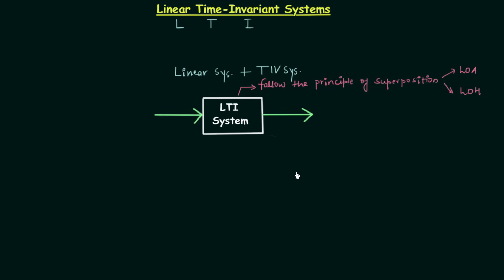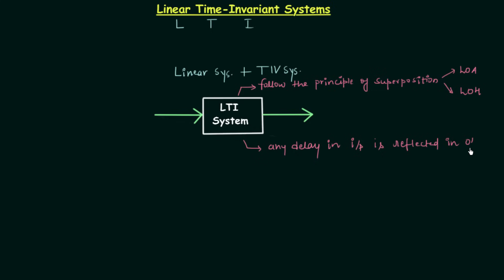Time invariant systems are those systems in which any delay in the input is also reflected in the output. So the LTI system will have an output in which any delay in the input is reflected in the output.